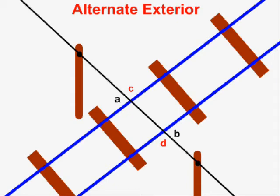But angles C and D do not have to have the same measure as angles A and B. Therefore, a transversal crossing a pair of parallel lines will always create two distinct pairs of alternate exterior angles.